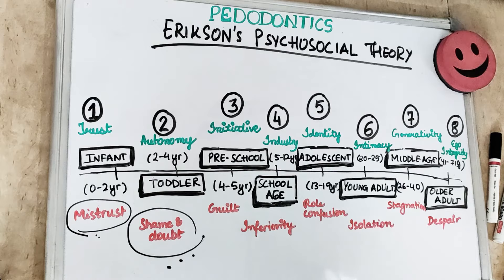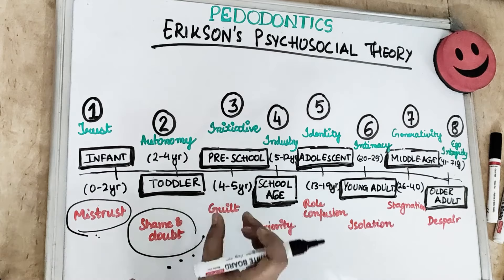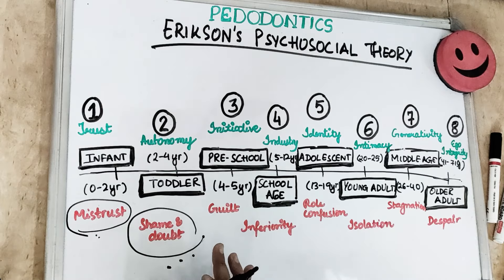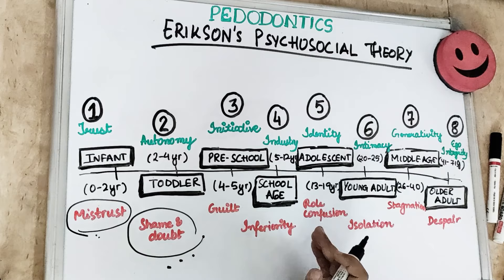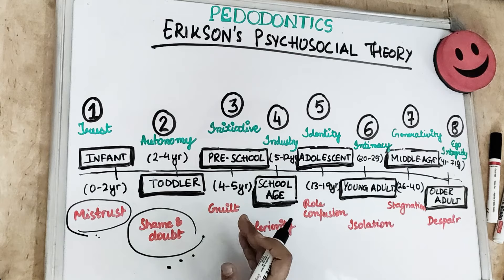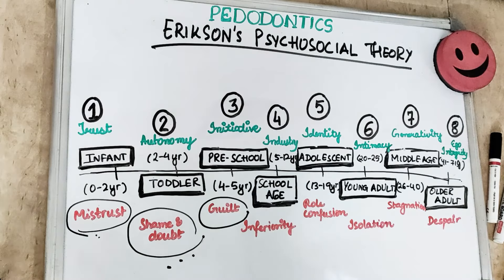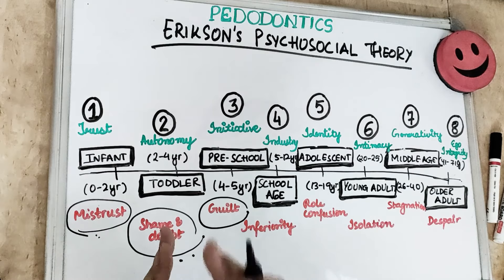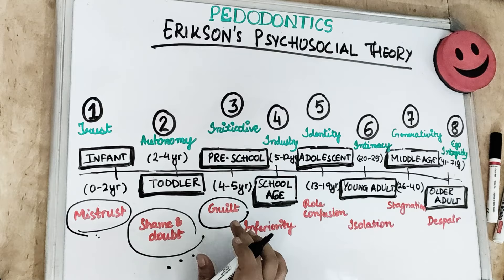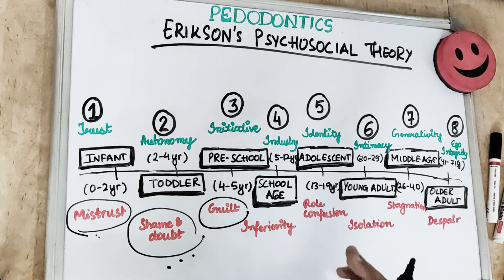The third stage is initiative versus guilt, seen in preschool children aged 4 to 5 years. Preschoolers live in a world of fantasy; they try to learn everything happening around them and ask lots of questions — usually starting with 'why' and 'what.' They draw whatever they see. If this sense of initiative is restricted, it results in guilt. The child should be encouraged to visit the dentist, and the visit should be framed as an adventurous experience. If the dental visit fails, it can lead to a sense of guilt.